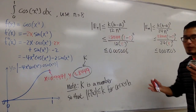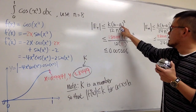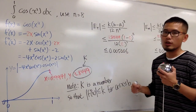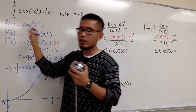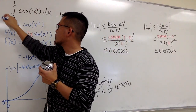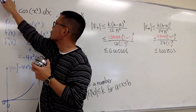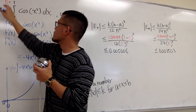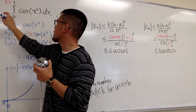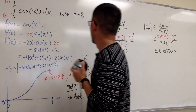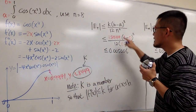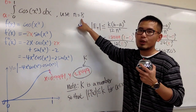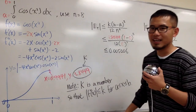Let me explain what each letter represents. The easy ones are a and b — these are just the limits of integration. In our case, a is the starting value, which is 0, and b is the ending value, which is 1. For n, it depends on the question — we are going to use 8 in this case.